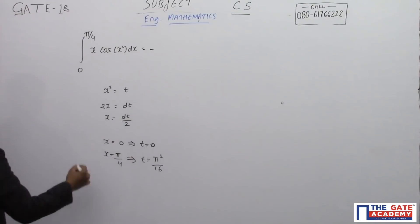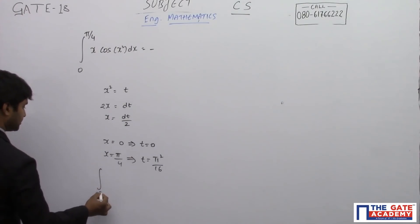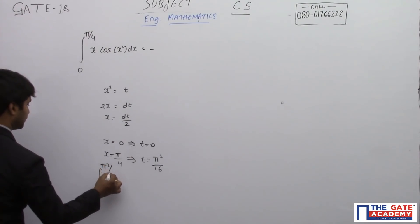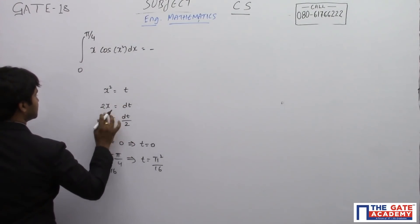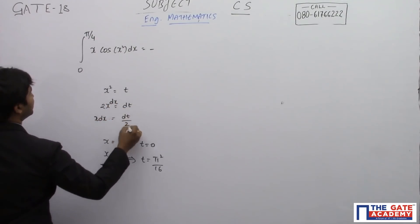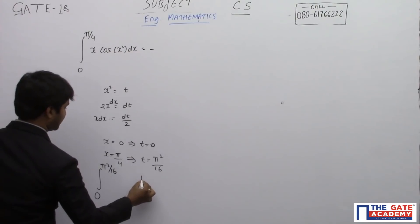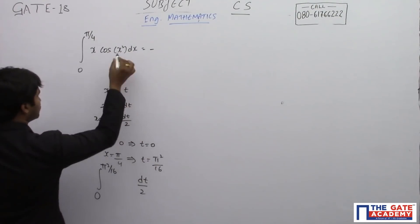If you substitute it, you are going to have integral of 0 to pi square by 16. x dx is going to be replaced with dt by 2, so you have dt by 2 and here you have cos t.